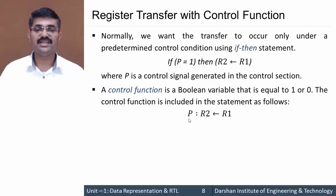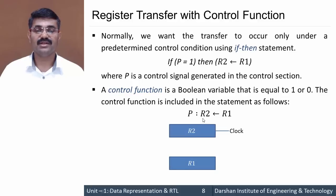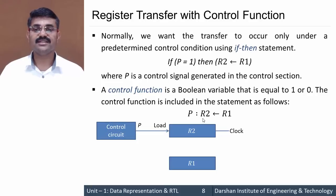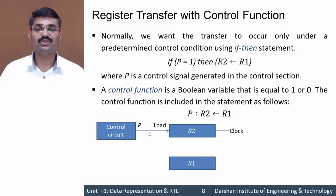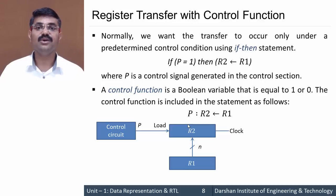Without a control unit, the transfer will not happen. When the control circuit sends signal P = 1, that signal is connected to the load input of register R2. When the load is enabled for R2, the content of R1 is transferred to R2.